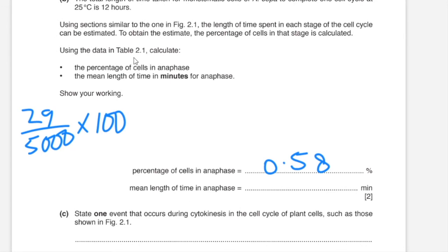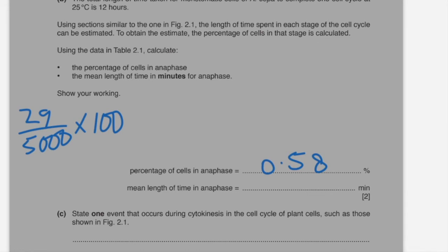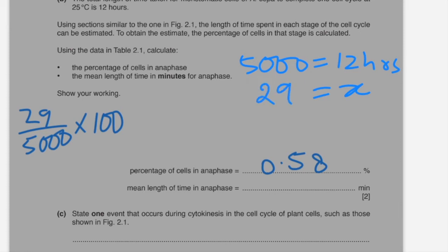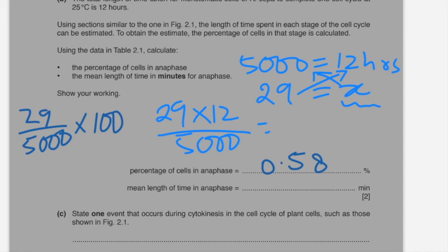For the mean length of time during anaphase: 5000 cells take 12 hours, so how many hours is taken for 29 cells? Using cross multiplication, to find the time taken for 29 cells in anaphase, multiply 29 by 12 and divide by 5000. That gives 0.0696 hours. To convert to minutes, multiply by 60, giving 4.176 minutes — corrected to two significant figures, consistent with the input data.